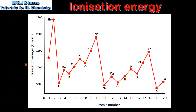Next we'll look at the graph of ionization energy on the y-axis against atomic number on the x-axis. The elements with the highest ionization energies are helium, neon, and argon — these three elements belong to Group 18, the noble gases. Looking at the trend in Group 18, as we go down the group from helium to neon to argon, the ionization energy decreases.